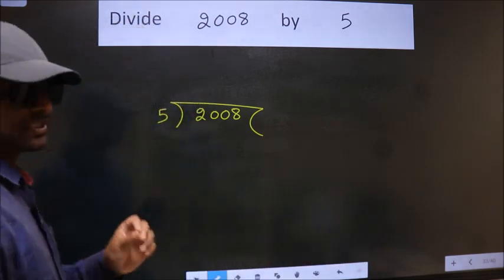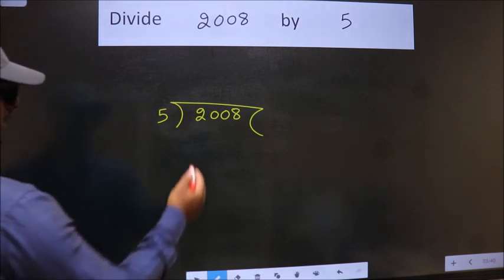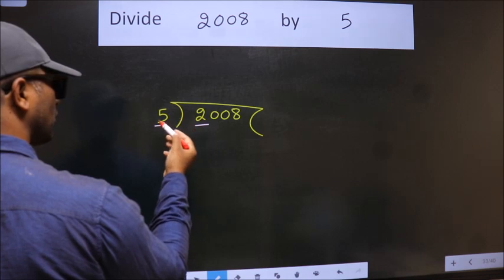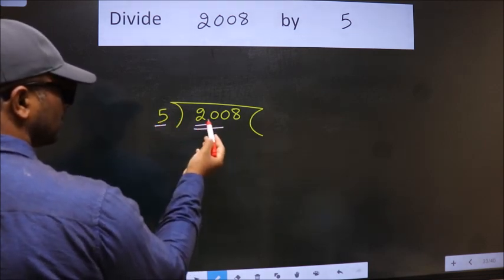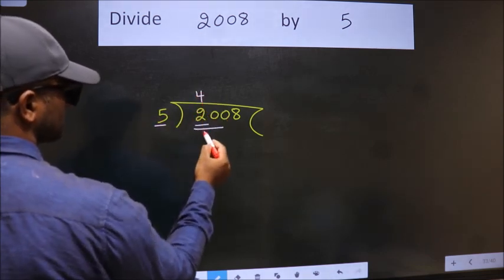This is step one. Next, here we have 2, here 5. Two is smaller than five, so we should take two numbers: twenty. When do we get twenty in the five table? Five fours are twenty.